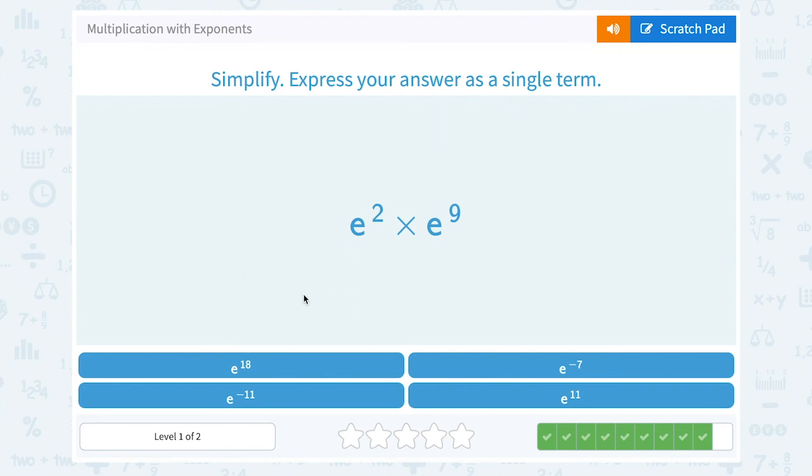e squared times e to the 9th. The base is the same, we can add those exponents. So e to the 2 plus 9 or e to the 11th power.